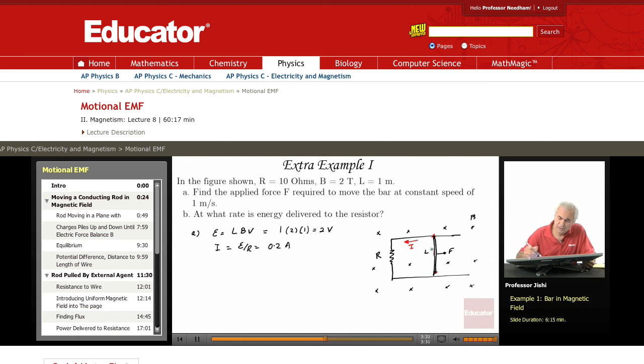And if a bar carries a current I and is sitting in a magnetic field, then the magnetic field exerts a force on the bar. The force, of course, F exerted by B, the magnetic field, is I·L cross B.